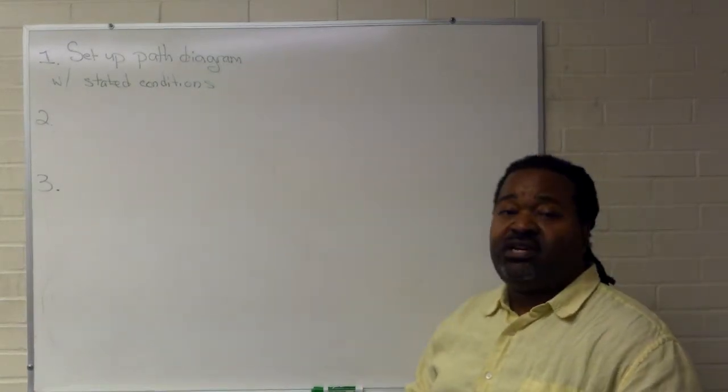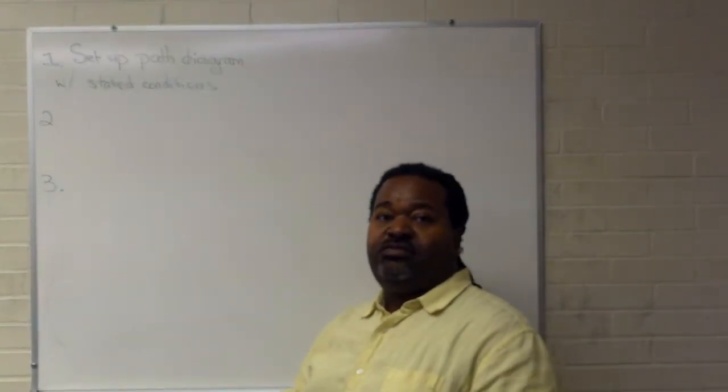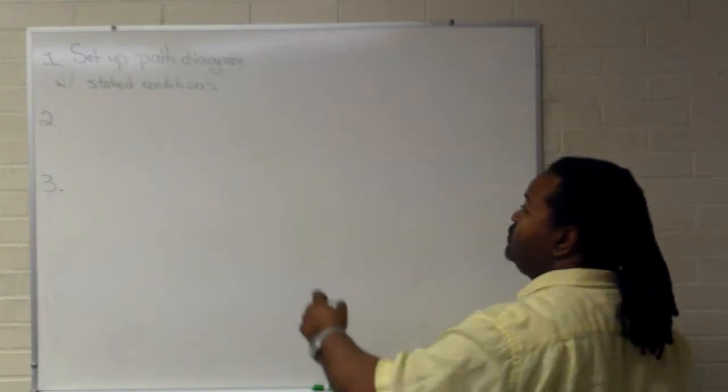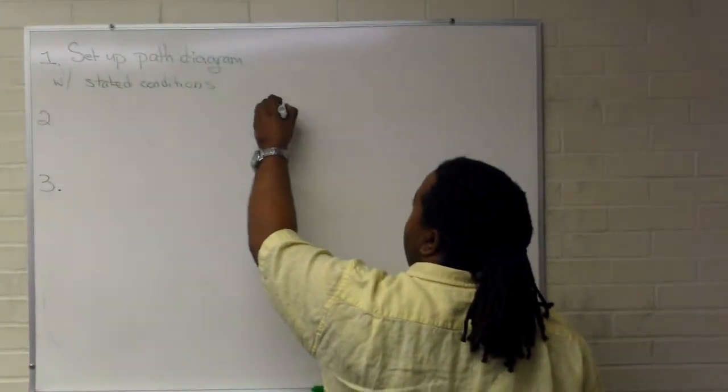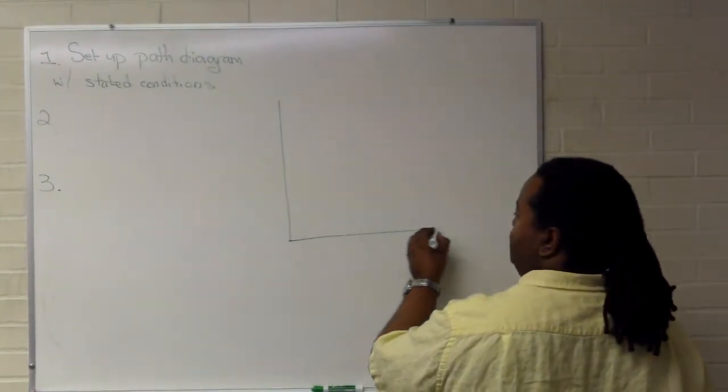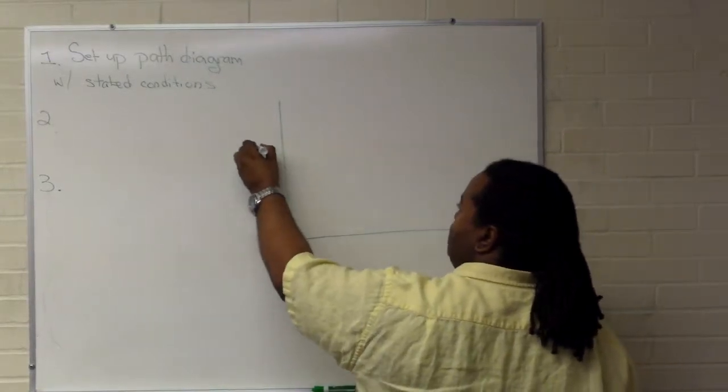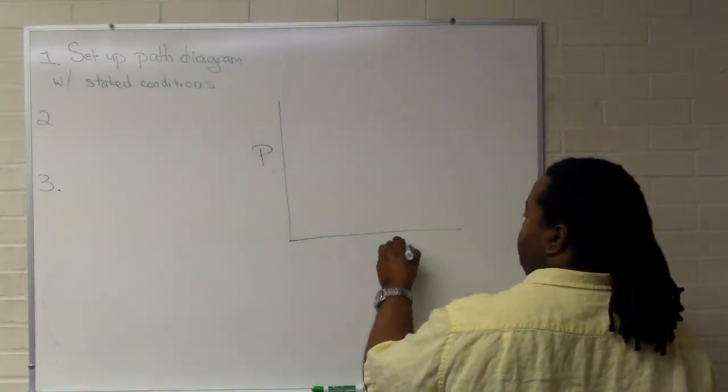The first step is to set up a path diagram with some set of stated conditions. So we will have two axes, typically something like pressure and volume.